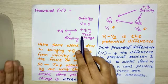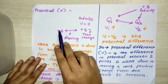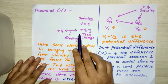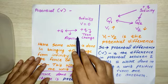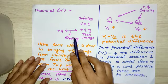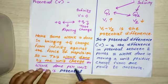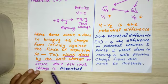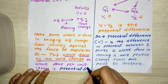When you are trying to bring this plus capital Q near this plus small Q, you are working against the force of repulsion. That work done per unit charge will be known as potential — the work done per unit charge is potential.